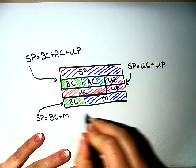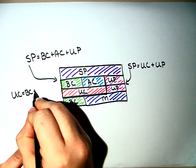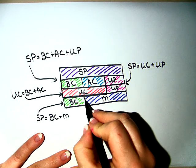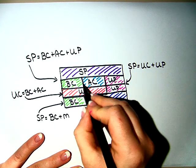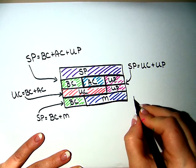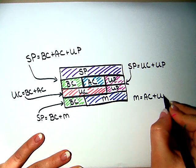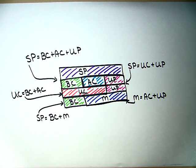However, this box is the exact same as this box. Which means that my margin or markup is the additional cost plus the unit profit. So you've got different things going on in different places and you need to be aware of how they all fit in to form a larger picture.